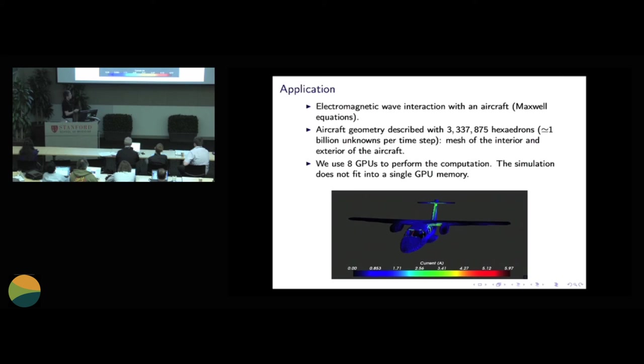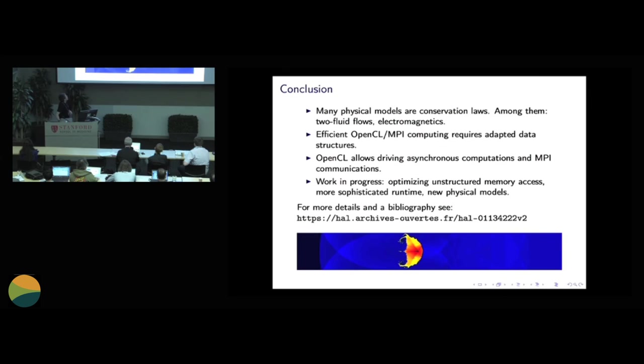So here you have an example of an electromagnetic wave coming over an entire aircraft. So the mesh is inside the aircraft and outside the aircraft. So it's a very big mesh. And we use eight GPUs in order to do the computations. And this is the end of my talk.